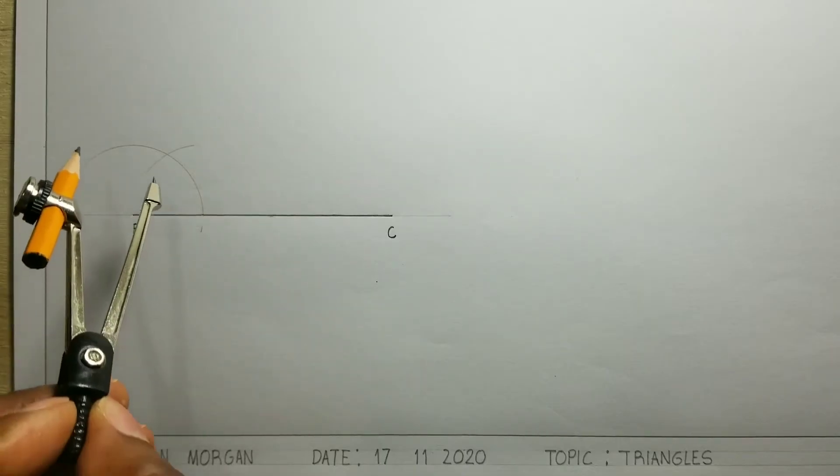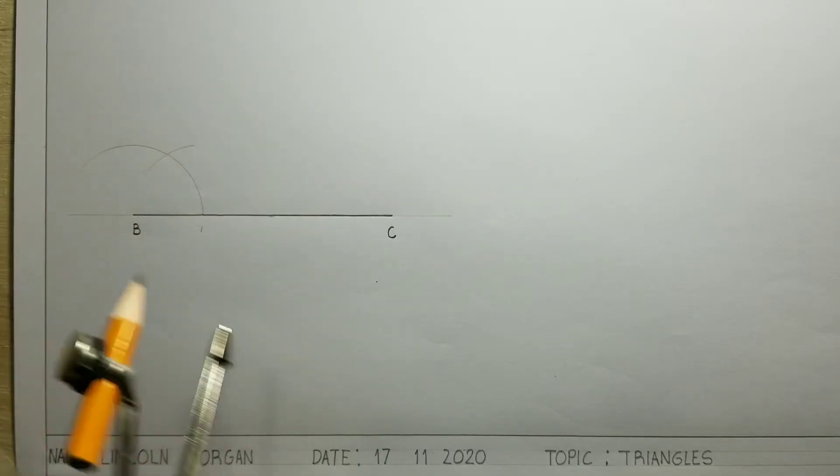Now where the two arcs intersect, we will draw a line from B through the intersection.